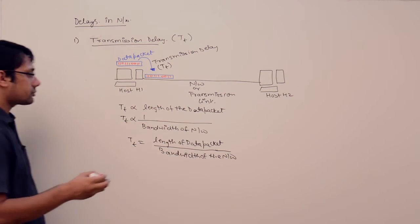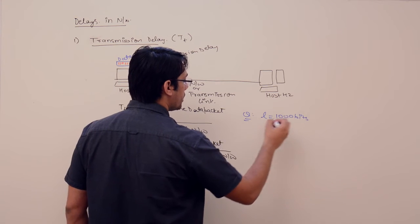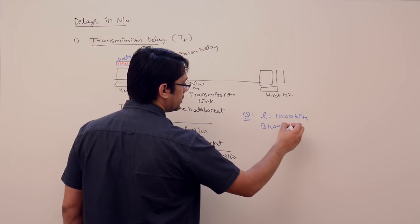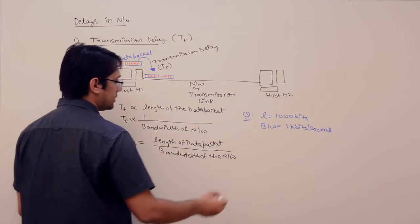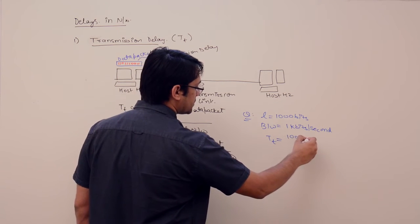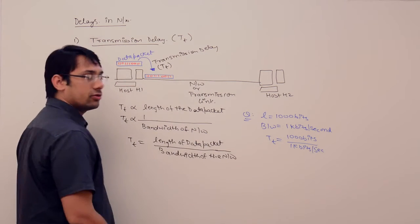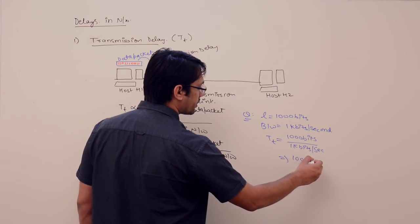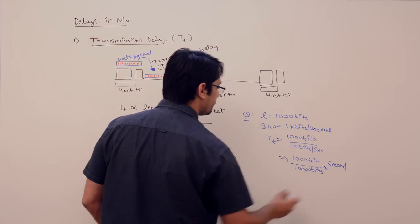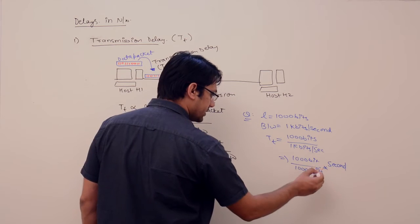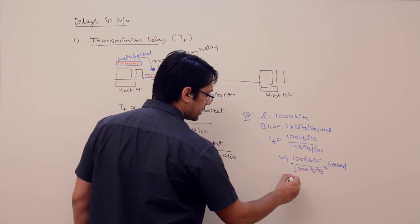For example, assume the length of the data packet is 1000 bits and the bandwidth of the network is 1 kilobits per second. Then transmission time is 1000 bits divided by 1 kilobits per second, which is 1000 bits divided by 1000 bits per second. Bits cancel with bits, 1000 cancels with 1000, so the transmission time is 1 second.